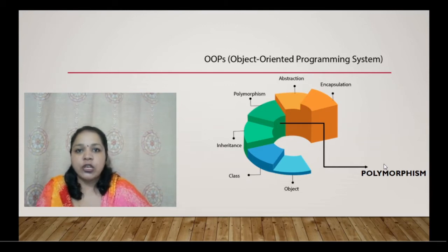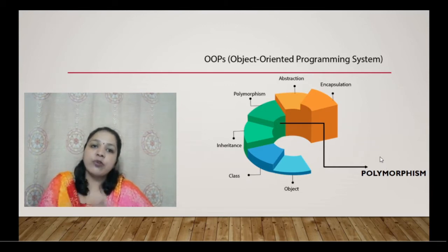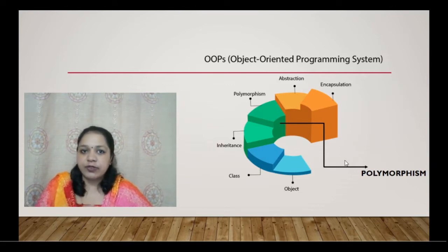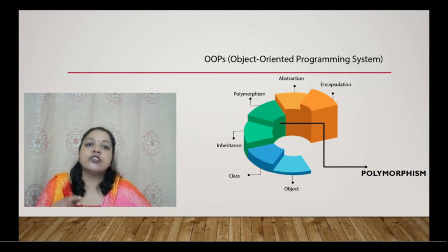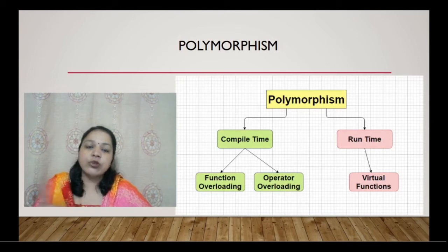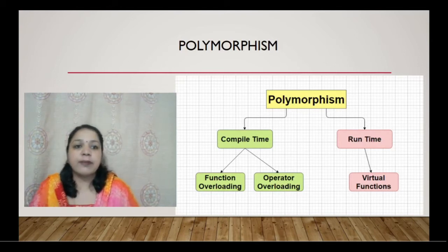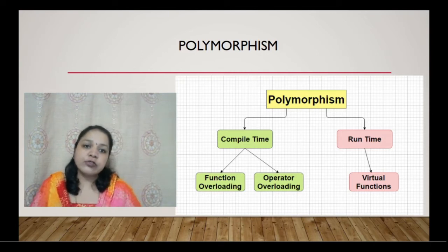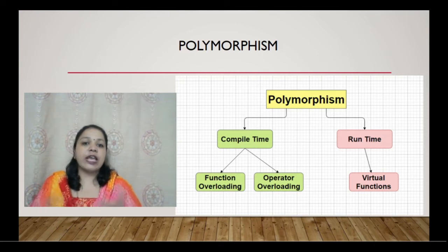Polymorphism means one thing having many forms. This is one of the powerful tools used in OOP. When it comes to polymorphism, there are two kinds: compile-time polymorphism and runtime polymorphism.